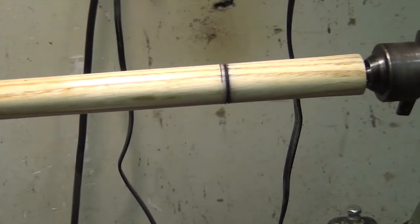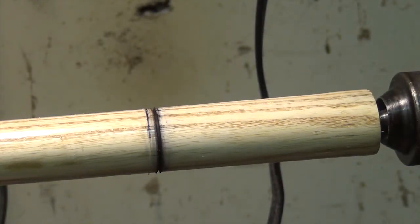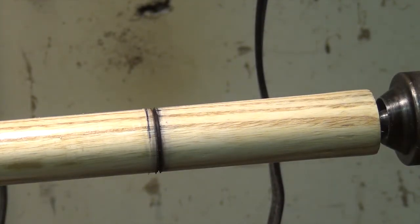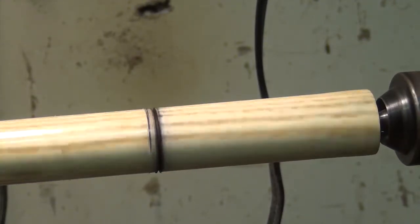And over here is just my sanding sealer, which is shellac and denatured alcohol. And that's not discolored at all and not really shiny at all.